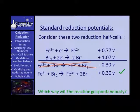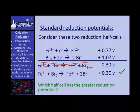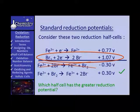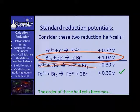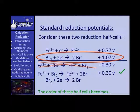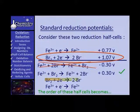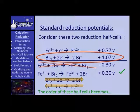Which half cell has the greatest reduction potential? That one gains the electrons. The order of the half cells: bromine plus two electrons producing bromide ion has the greater reduction potential, so it goes on top. The ferric ion plus an electron producing the ferrous ion goes below. When you put the two together, one goes that way and the other goes this way — and that's how you add them up and get a complete reaction with a positive voltage.